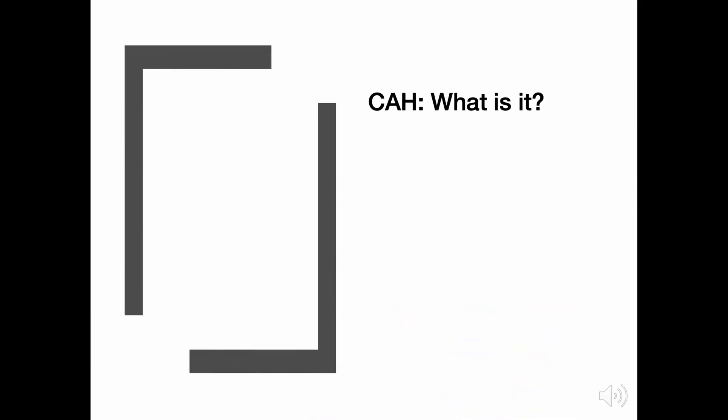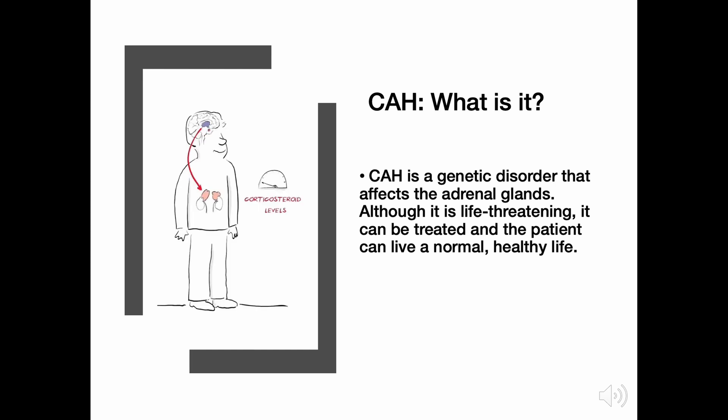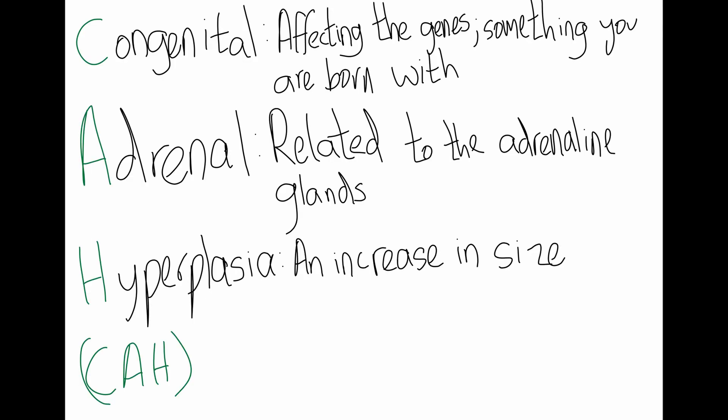Now let's look at CAH. This is a genetic disorder that affects the adrenal glands. Although it's life-threatening, it can be treated and the patient can live a normal, healthy life. Now let's break the name down to better understand what CAH is and what it means for affected people.